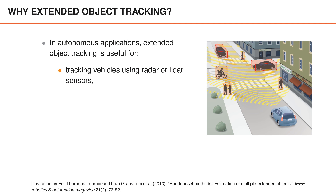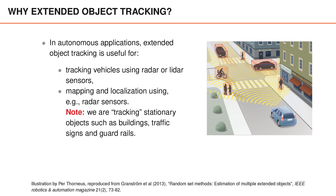But that approach is so far not commonly used for radar data. We can also use extended object tracking to perform mapping and localization, where the task is to figure out where the road is, where the buildings are, and so on, in order to figure out how to control the vehicle. Note that in this case we are tracking stationary objects, but even though they do not move, we can still use the same techniques to solve the problem.